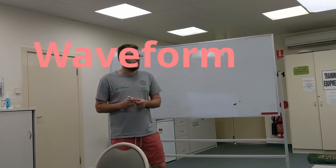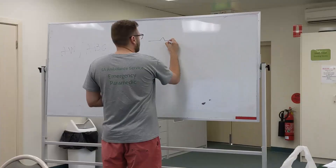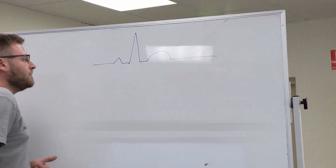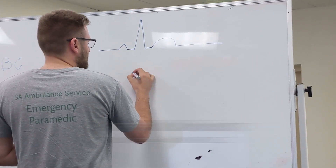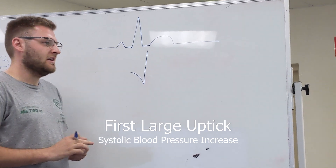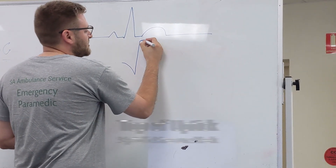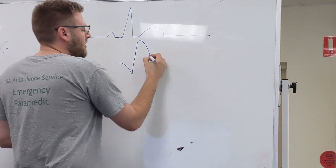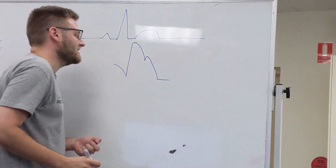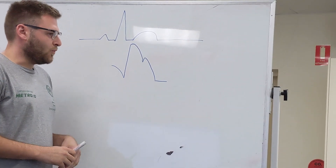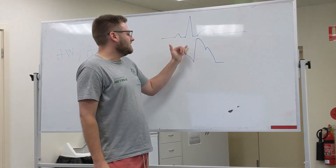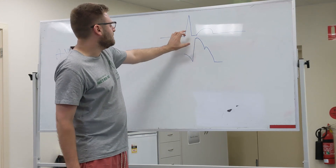Looking at the waveform: if we draw an ECG, we have our P wave, our QRS complex, and our T wave, and the arterial waveform corresponds with the ECG. The large uptick represents systolic pressure rising; at its peak is the systolic pressure reading. We then have a notch called the dicrotic notch, where the aortic valve closes, followed by the diastolic pressure runoff back down to baseline.